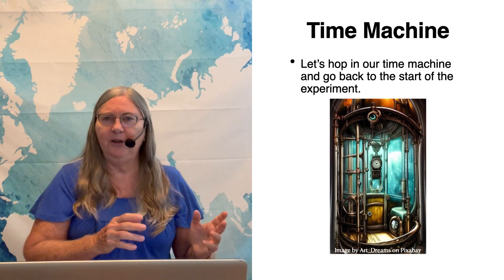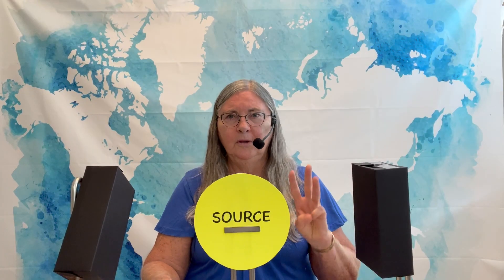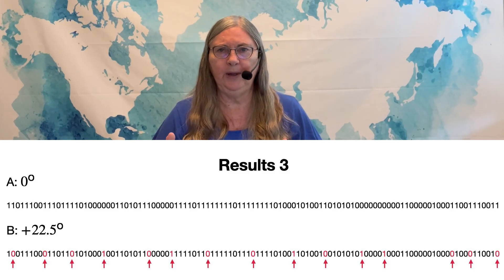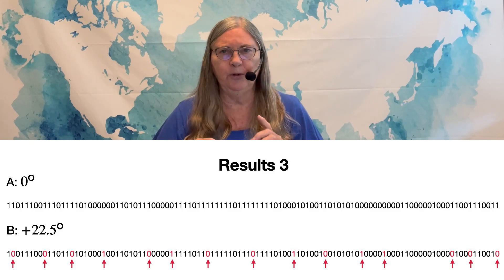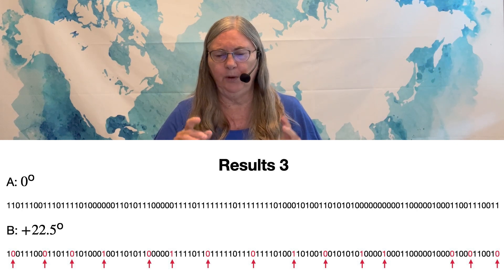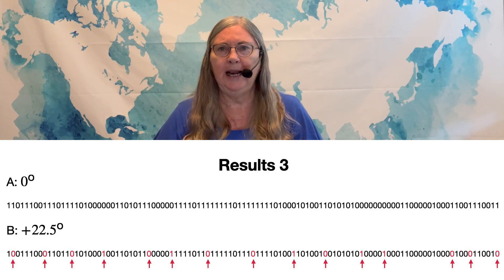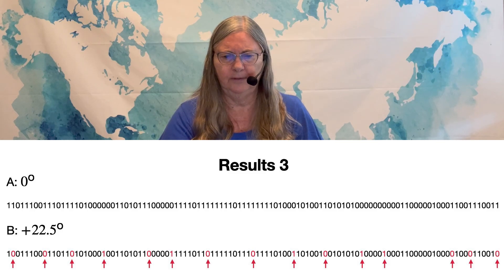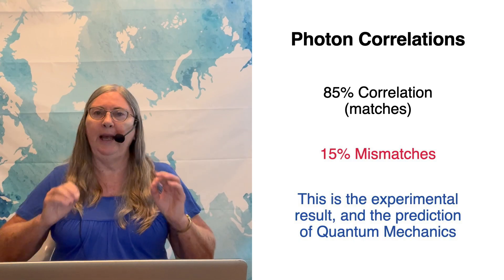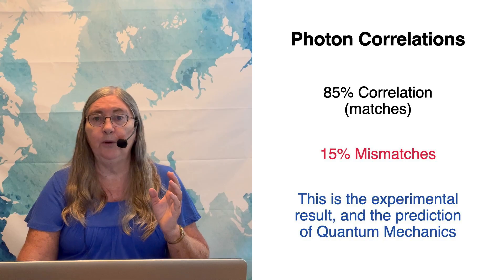Now we hop back in our time machine, going back to the beginning again. For run three, we put detector A back to zero degrees and change detector B — rotating it 22.5 degrees in the other direction. We take the same series of photons. Here are the results from run three: again there's a 15% mismatch, so I arbitrarily picked 15 of the zeros and ones from detector B and changed them to the opposite, marking them with red arrows. Again we have 85% correlation and 15% mismatches. The experiments agree with the predictions of quantum mechanics exactly.